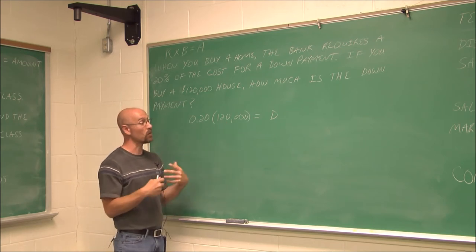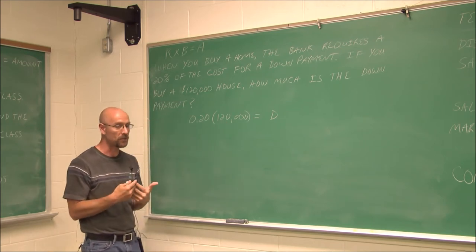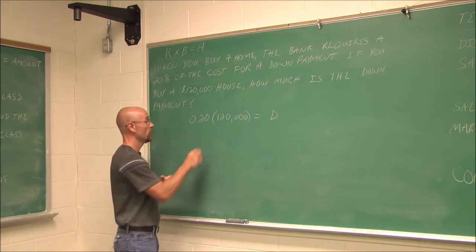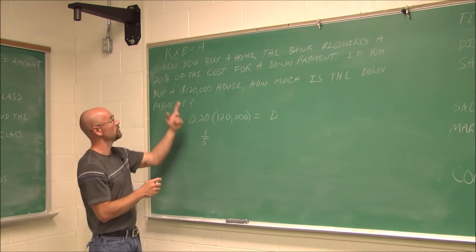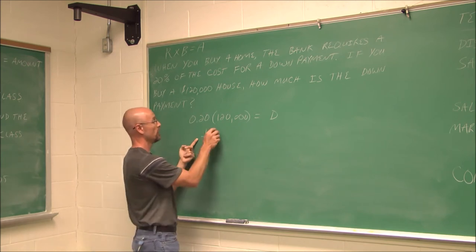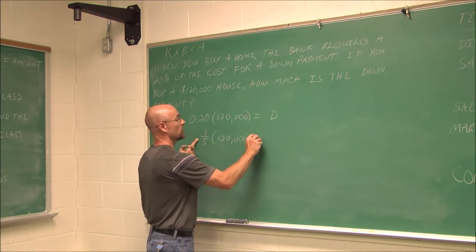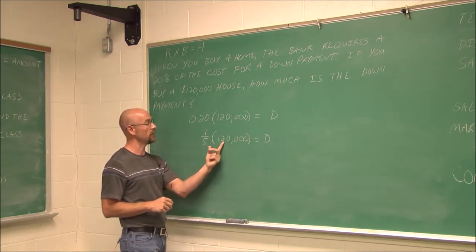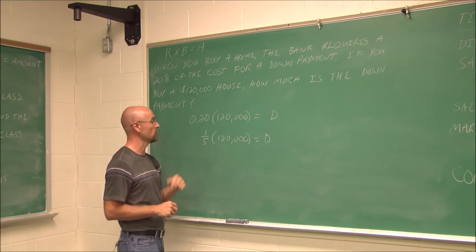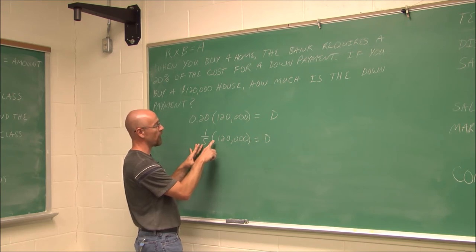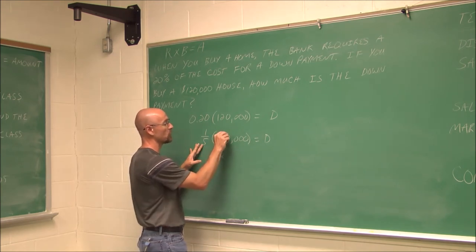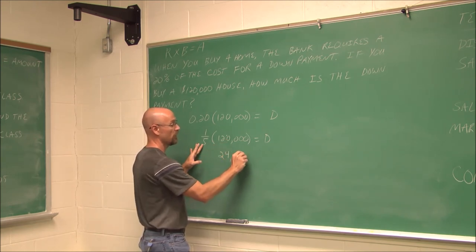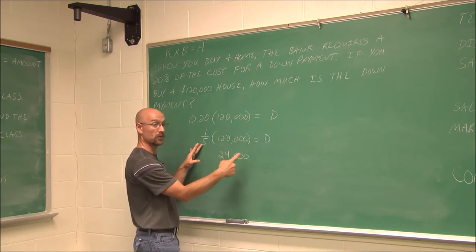How much is the down payment? We can now solve for it. I could multiply this, or because I'm comfortable with percents, and they make my life so much easier at times, I recognize 20% as 1 fifth. So I convert my percent to a decimal. 20 over 100 reduces to 1 fifth times 120,000 equals the down payment. Essentially, if I want to do this math, I just have to divide this by 5. 120,000 divided by 5. 5 goes into 12 twice with a remainder of 2. 5 goes into 20 four times with no remainder. And it goes into 0, 0, and 0, 0, 0, 0, and 0 times.